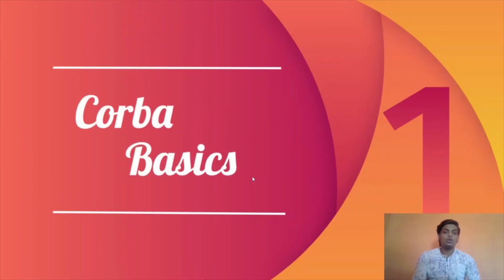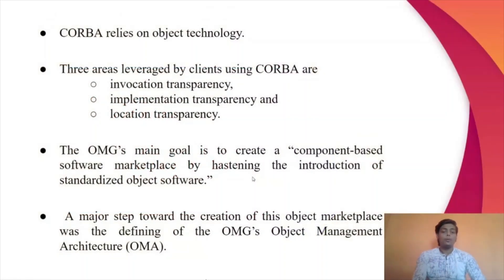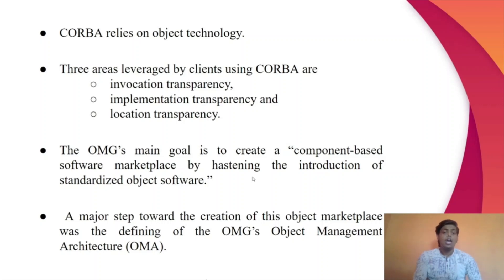Our first sub-topic is CORBA basics. CORBA relies on object technology. To accomplish this, encapsulation, inheritance, polymorphism, and dynamic binding hide implementation details, making CORBA's work appear transparent. Three areas leveraged by clients using CORBA are invocation transparency, implementation transparency, and location transparency.